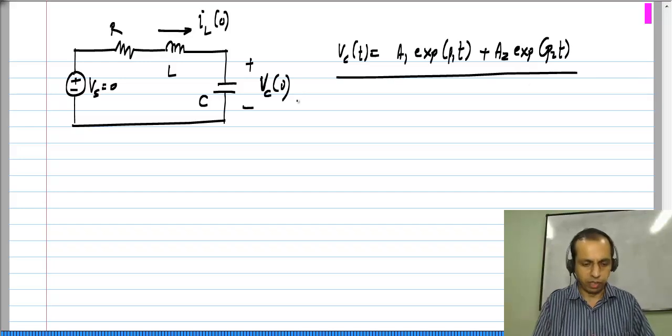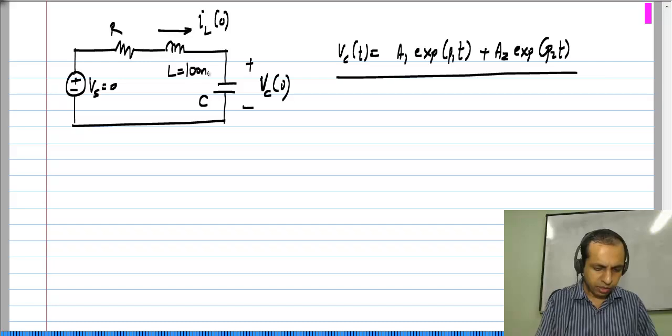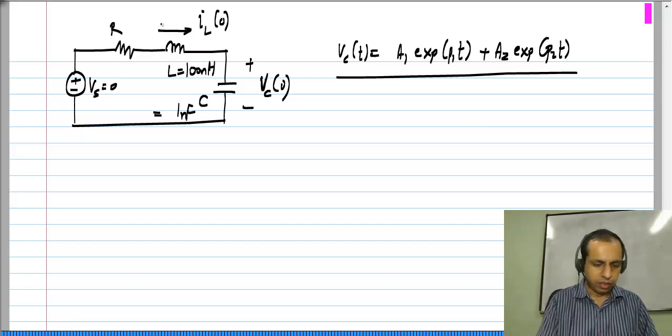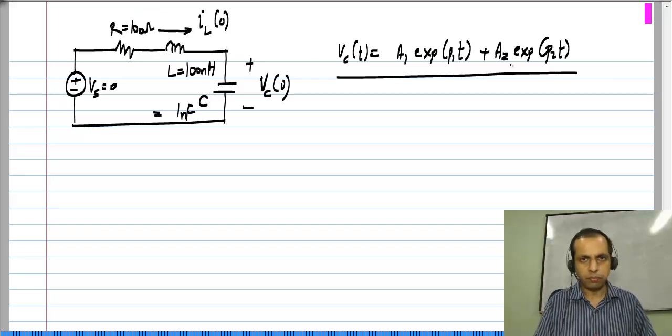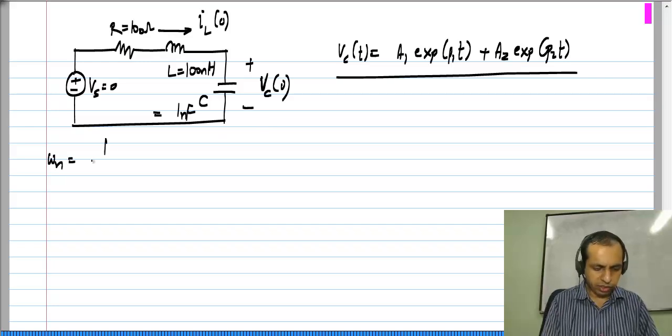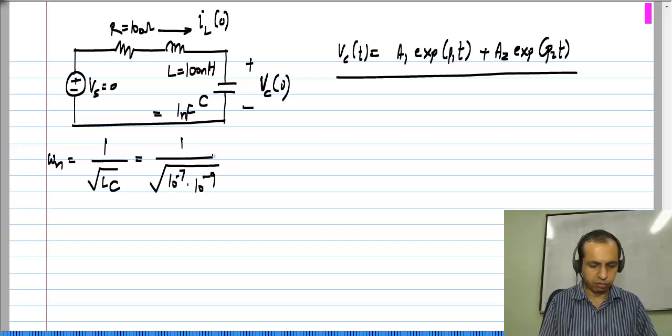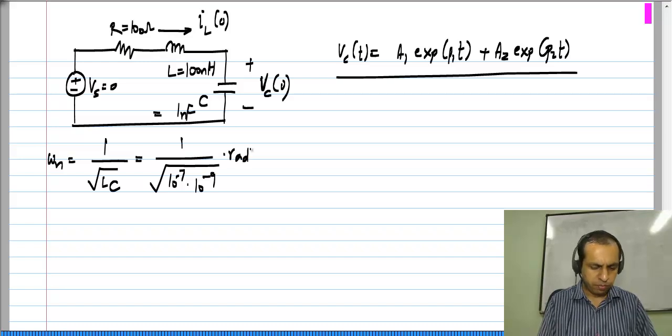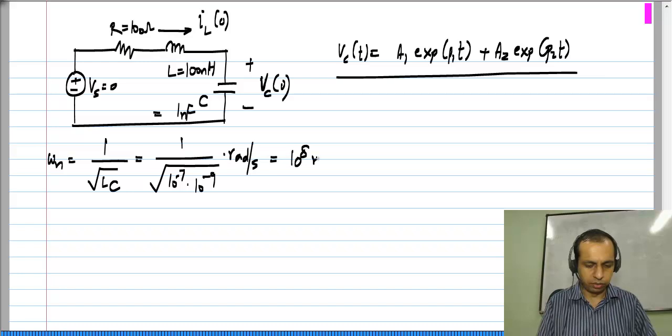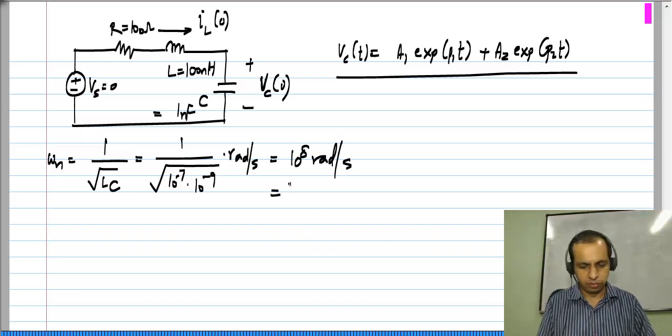Now let me take some numerical values. I will take L to be 100 nanohenries and C to be 1 nanofarad, and let me say that R is 100 ohms. Then we know that the natural frequency omega_n is 1 over square root LC, which is 1 over square root of 10 to the minus 7 henries times 10 to the minus 9 farads. This result will be 10 to the 8 radians per second, or 100 mega radians per second.